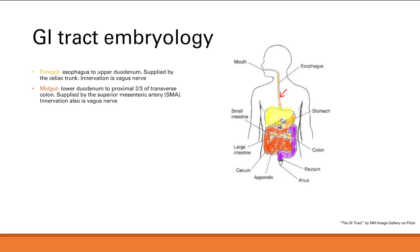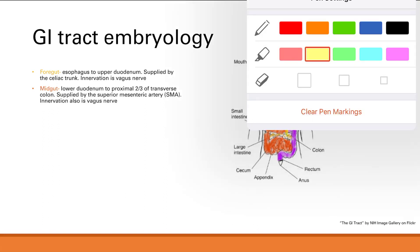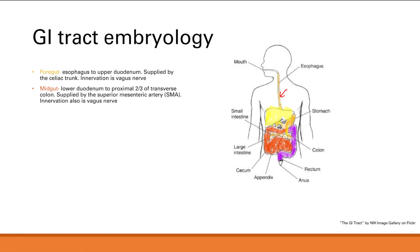Next is the midgut. The midgut continues on from the lower duodenum, outlined in red, all the way to the proximal two-thirds of the transverse colon. The midgut has a blood supply from the superior mesenteric artery and innervation from the vagus nerve.